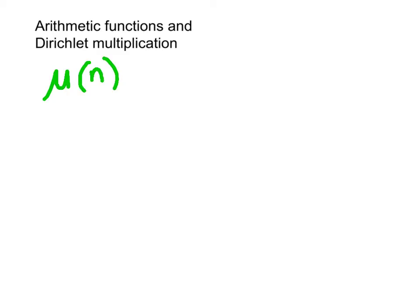Now if we have the prime factors written out, then mu of n is equal to minus 1 to the power k, where k is the number of distinct prime factors. That's if it's square-free. It equals 0 if it has a square factor greater than 1, and it equals 1 if n is 1.